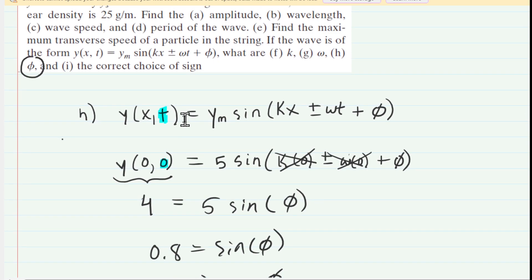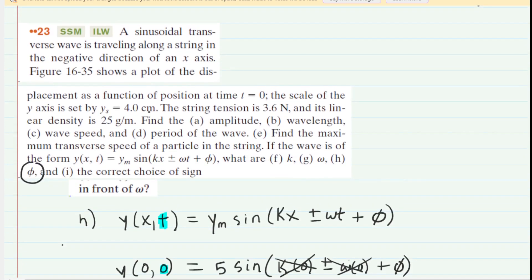And then finally, in part I, we need the correct choice of sign in front of omega. Sorry, the question got cut off there. So the correct choice of sign in front of omega. And this is not going to be too bad because the question noted at the very beginning that the wave is traveling in the negative direction of an x-axis. So when you have a wave traveling in the negative direction of an x-axis, then the sign for the omega term is actually going to be a positive sign. So it's kind of opposite, perhaps, to your intuition. But the correct answer for choice I is going to be a positive sign in front of omega because, again, the wave is traveling in the negative direction of an x-axis.